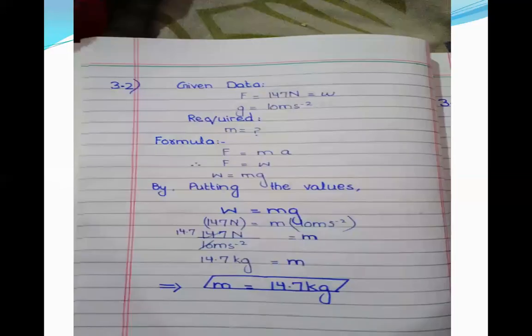Next, problem 3.2. The statement is: the weight of a body is 147 Newton. Weight W equals F, so F is equal to 147 Newton. The value of g is 10 meters per second squared. What is its mass? We want to find mass.